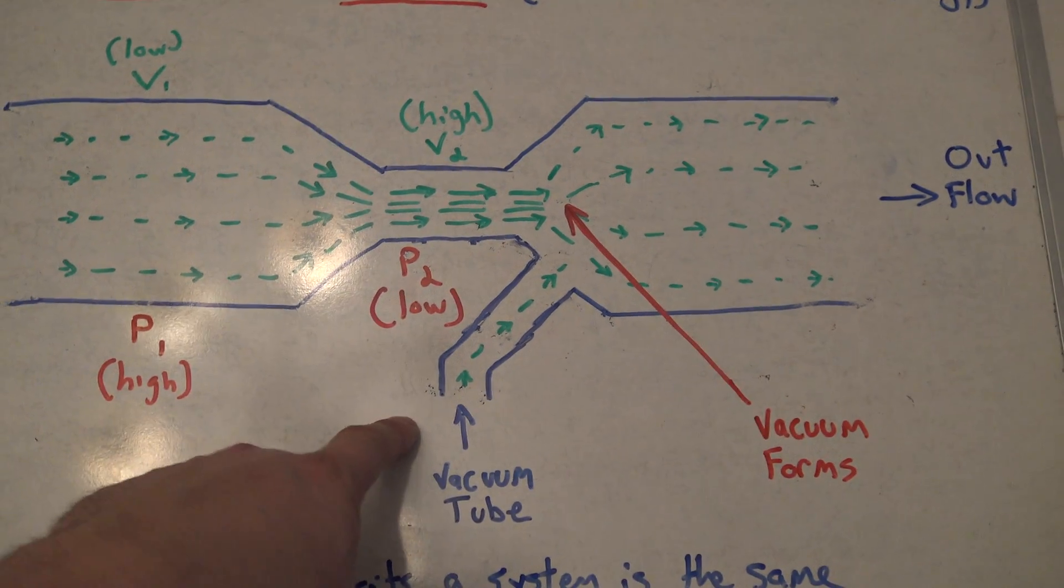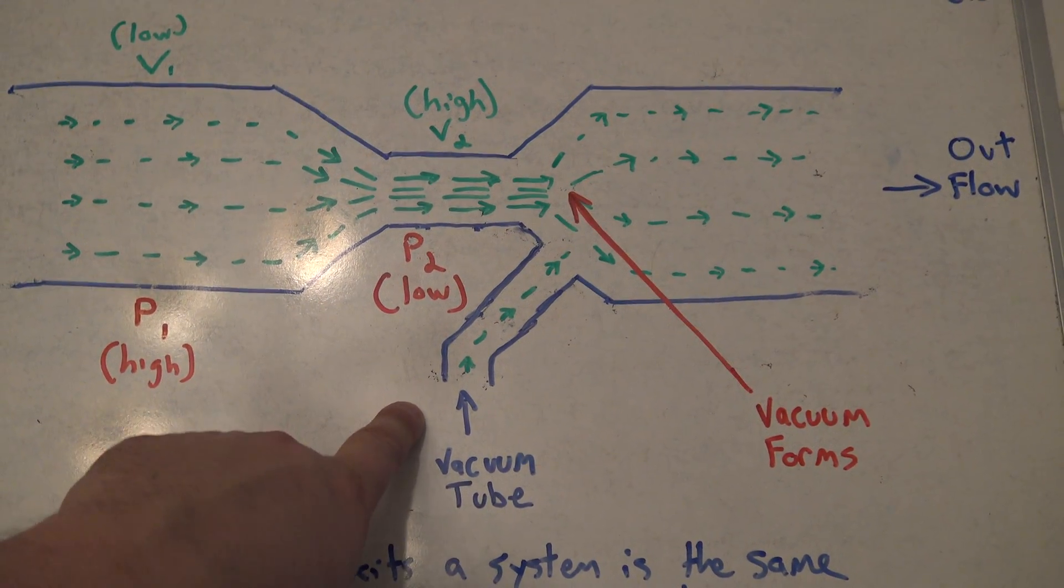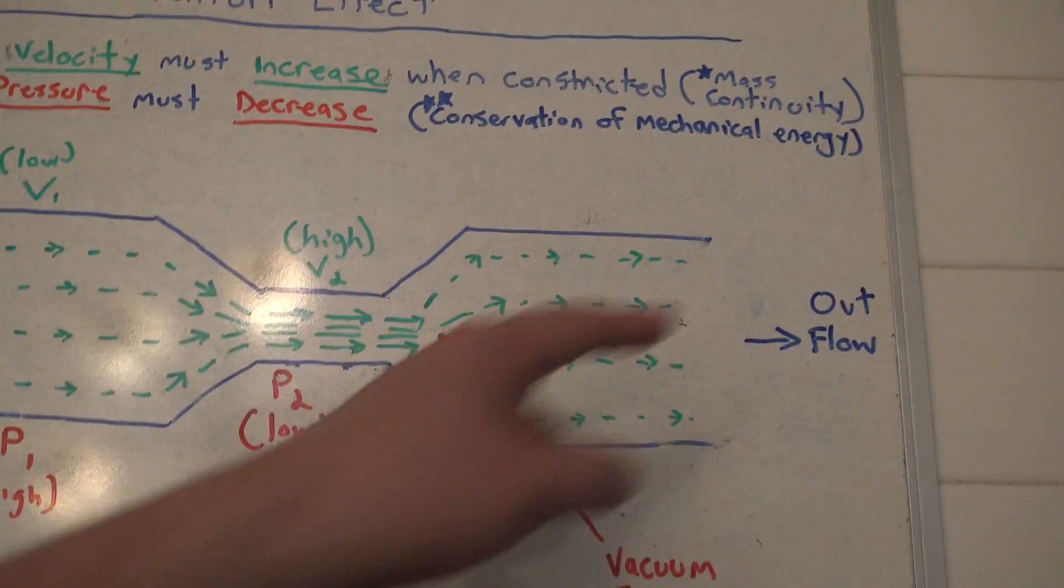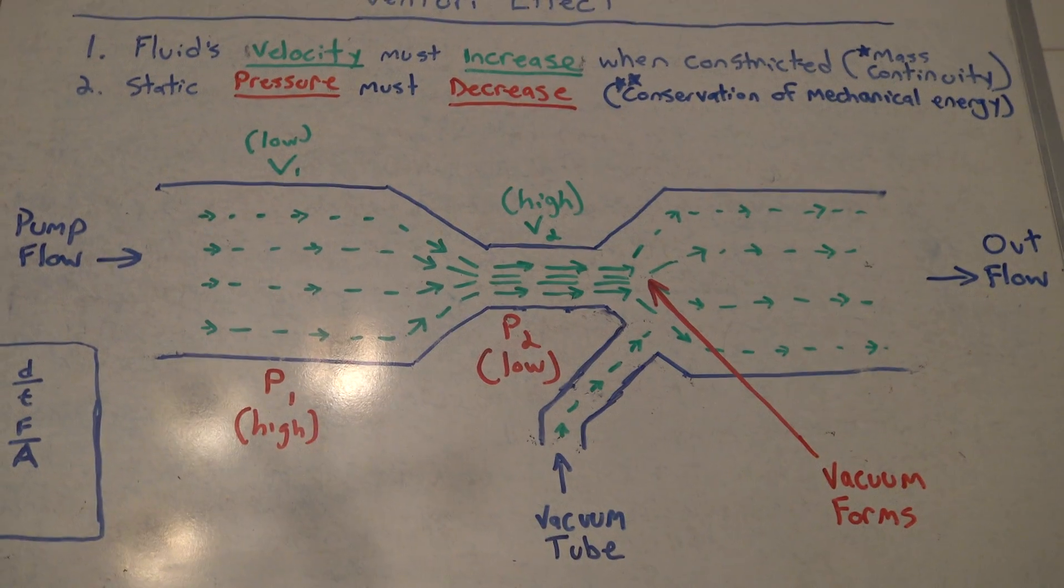And what do you have here? This is the vacuum tube that you actually put into your aquarium, and water is drawn up through that vacuum tube and it allows you to clean your aquarium.